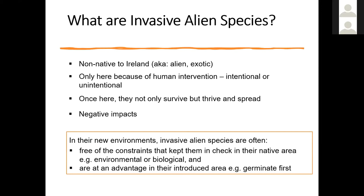It's important to understand that invasive species in their new environments are often free of the constraints that kept them in check in their native range — free from environmental constraints such as extremes of climate, or biological constraints. Perhaps they don't have predators or pathogens here that would keep their populations in check. They're also at an advantage because they haven't evolved with the native species, so things like they germinate first or they spawn first, giving them a leg up to compete with our natives.